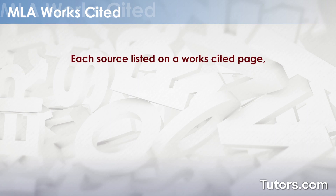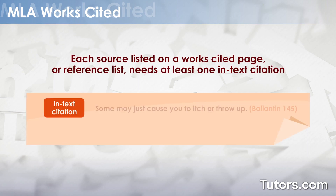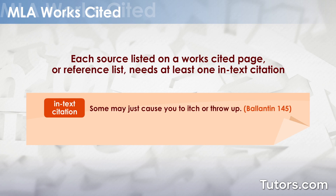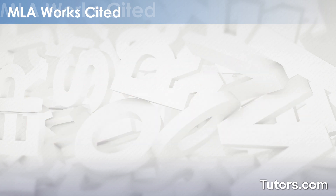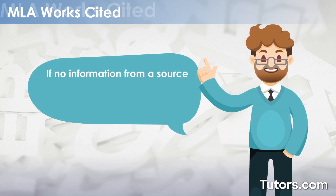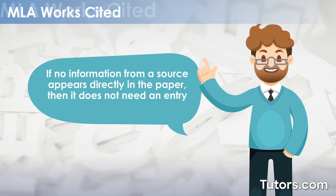Each source listed on a Works Cited page or reference list needs at least one in-text citation in the research paper, including paraphrases. If no information from a source appears directly in the paper, then it does not need an entry on the Works Cited page.